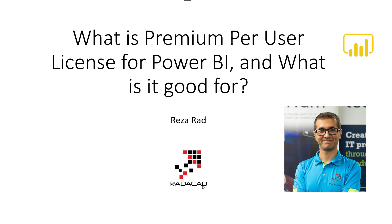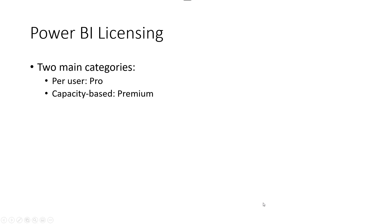To understand it, you first need to understand a little bit about Power BI licensing. There are two main categories: one is per-user-based licensing, which includes free and Pro — the one mostly used in organizational environments is Pro. The other is capacity-based, which includes Premium and Embedded, and the one with the most features is Premium. I'm skipping many details to lead the conversation into Premium Per User.